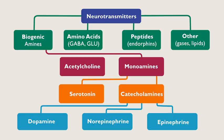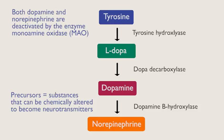Neurotransmitter molecules are synthesized from precursors under the influence of enzymes. Precursors are substances that can be chemically altered to become neurotransmitters. For example, the protein in chicken or turkey contains the amino acid tyrosine. When we eat chicken or turkey, the protein is broken down into its constituent amino acids, and these amino acids can be converted into neurotransmitters.